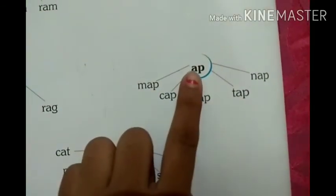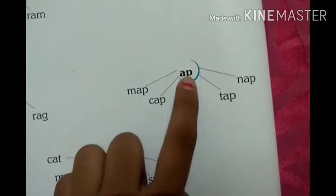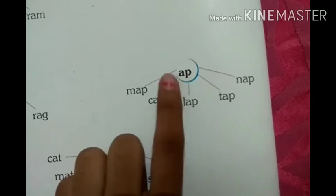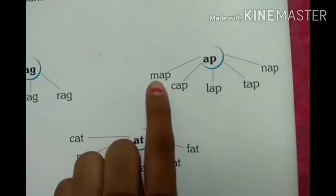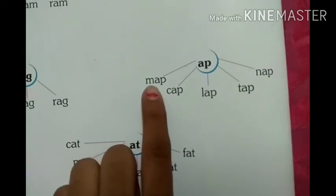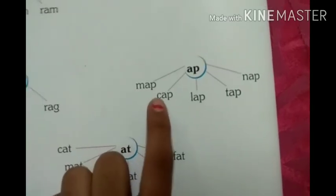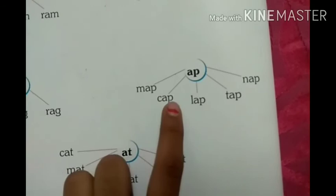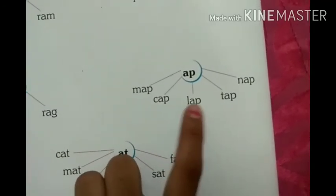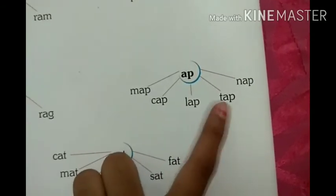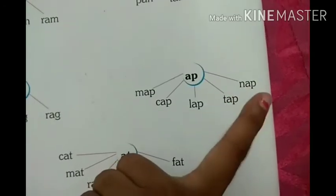A and P make AP. A, P — AP. Repeat it with me: A, P — AP. What is the sound of C? K — CAP. L — LAP. T — TAP. N — NAP.